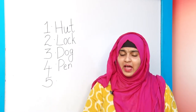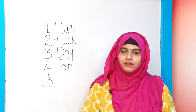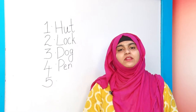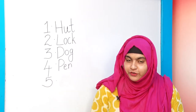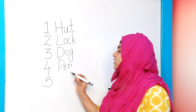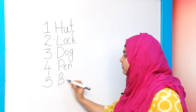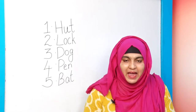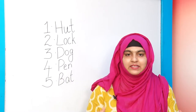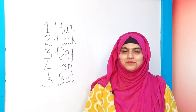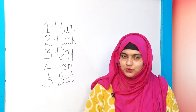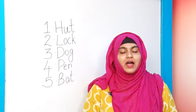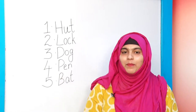I have a black pen. I like to write with a pen. The fifth word is B-A-T — bat, bat. I like to play with my bat. I have a yellow bat.